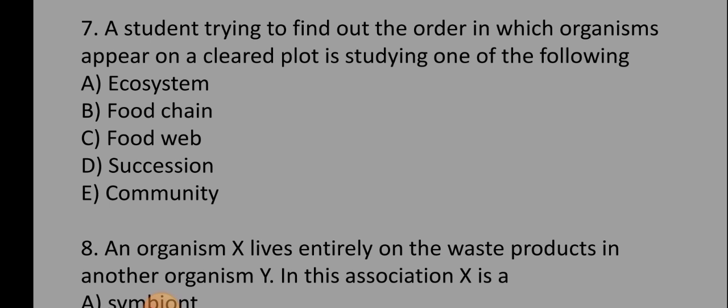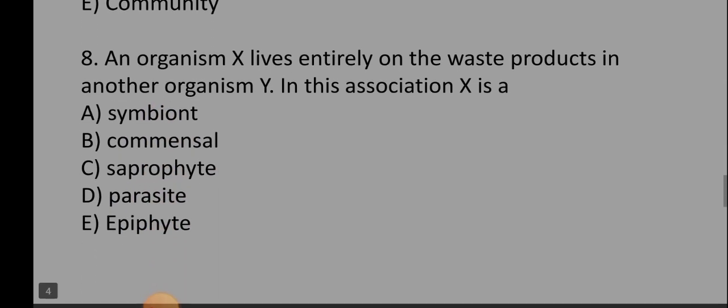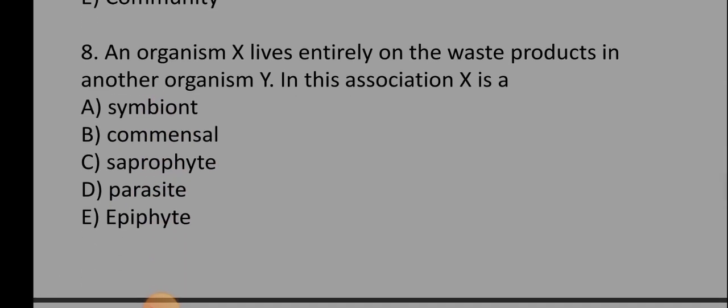Number seven: a student trying to find out the order in which organisms appear on a clear plot is studying succession — that is the correct option. Number eight: an organism S lives entirely on the waste product of another organism Y. In this association, S is a commensal.